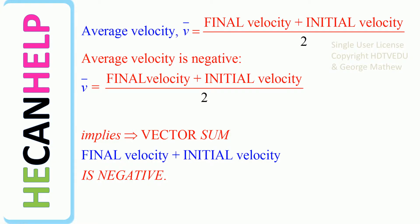Average velocity is the final velocity vector plus the initial velocity vector divided by two. If average velocity is negative, what does that mean? It means that the final velocity plus the initial velocity is negative.